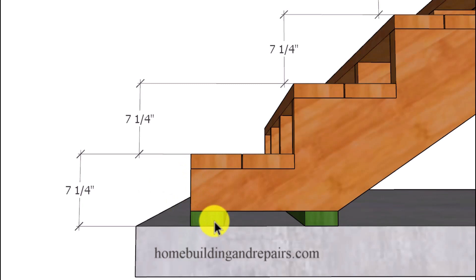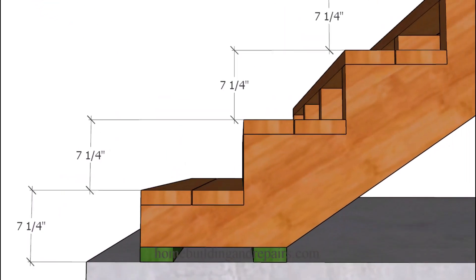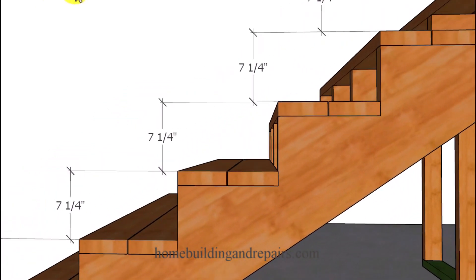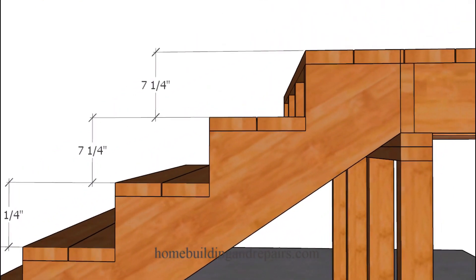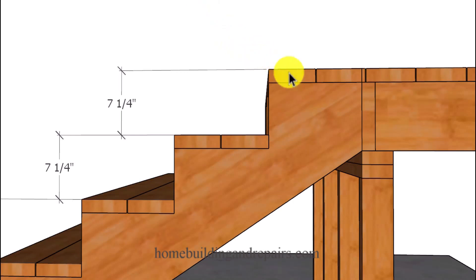All I did here was subtracted any materials that the stair stringer was going to be sitting on along with the thickness of the stair treads. And I'm not going to need to do that for the rest of the stairway unless, and this is the biggie here, unless any of the material sizes change in thickness.